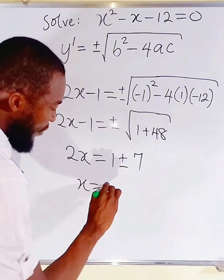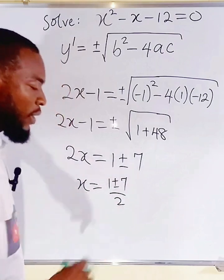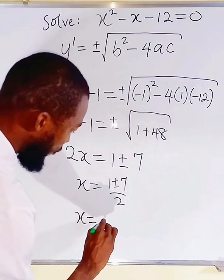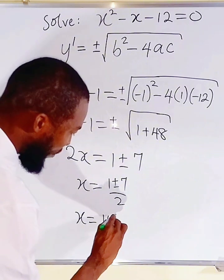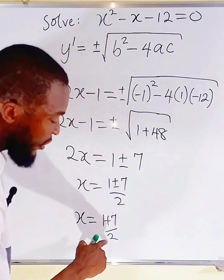Finally, x is equal to 1 plus or minus 7 divided by 2. You can split this. So, x could either be equal to 1 plus 7 divided by 2.